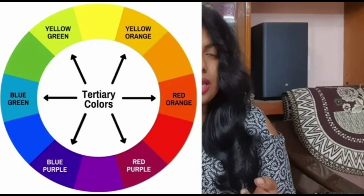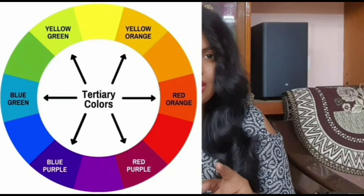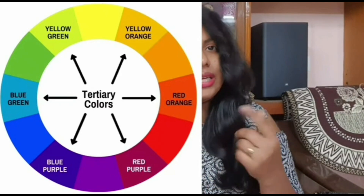The color wheel includes primary colors, secondary colors, and tertiary colors. Primary colors are red, blue, and yellow. From red, blue, and yellow, we create secondary colors.